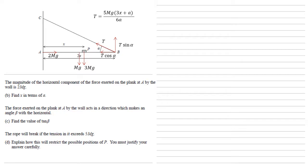We can now see this is acting horizontally, so let's do some resolving horizontally. The only forces going that direction are the 2Mg going to the right, and the T cos alpha going to the left, so they must be equal to each other as the plank isn't moving. We worked out what T is in the previous question, and we know that cos alpha equals four fifths, so putting them in, we get the 5Mg brackets 3X plus A over 6A times by four fifths equals 2Mg.